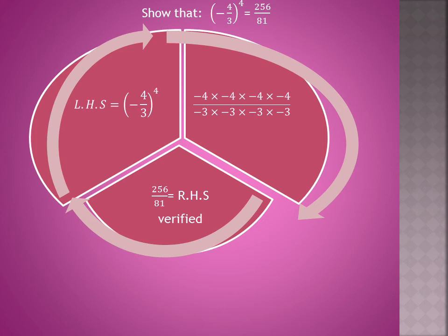First, we take the left-hand side equals (-4/3)^4. It means -4 is 4 times and 3 is also 4 times with the minus sign. Now, we multiply the terms.